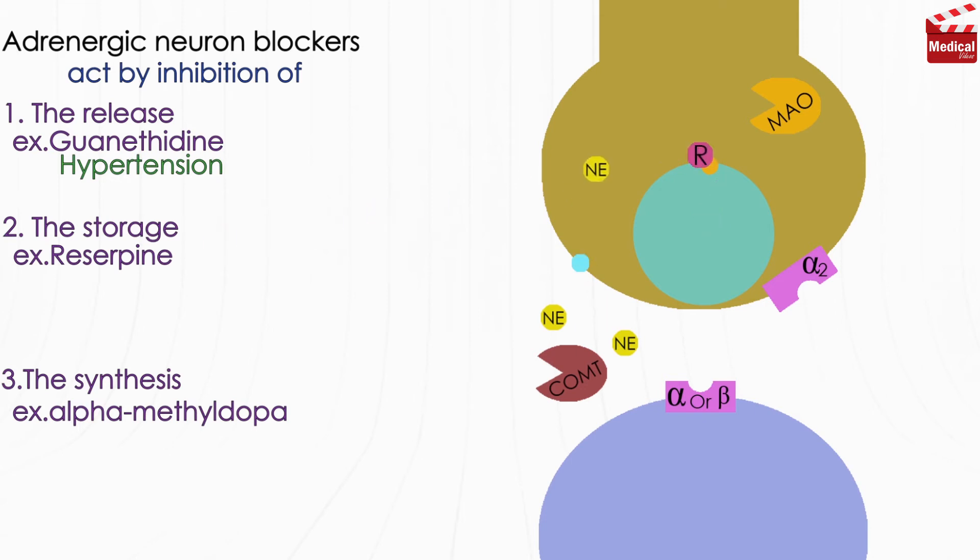Reserpine inhibits granular uptake and storage of biogenic amines, such as norepinephrine, dopamine, and serotonin, from the cytoplasm into storage vesicles in the adrenergic nerve terminals in all body tissues. And this causes depletion of biogenic amines. So of course the sympathetic function is impaired because of decreased release of norepinephrine.